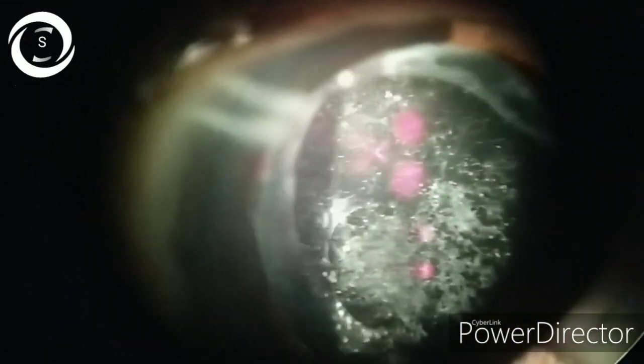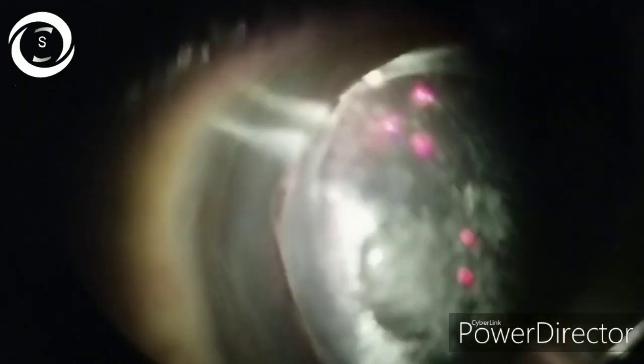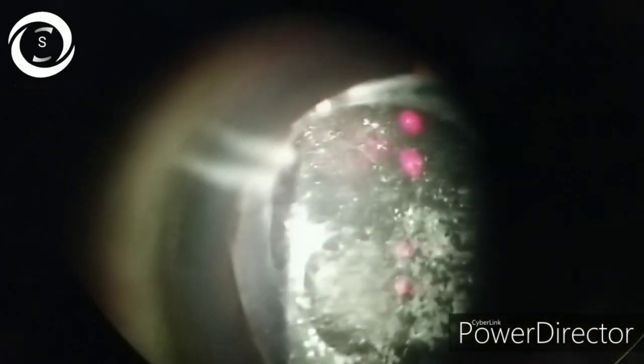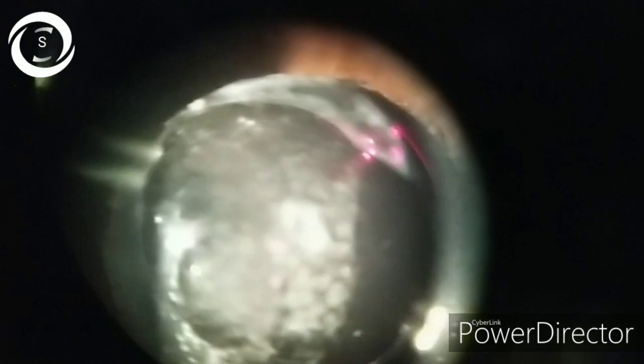Now why is it formed? Actually, lens epithelial cells from the remaining anterior capsule migrate posteriorly and then proliferate there, causing secondary opacification of the clear posterior capsule.